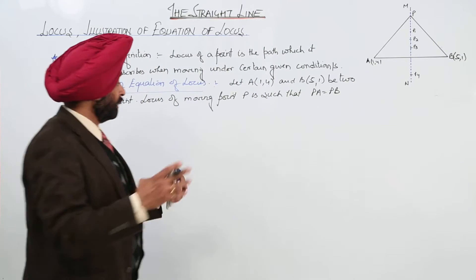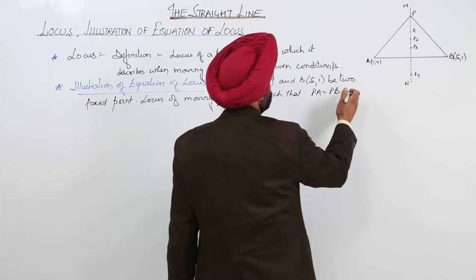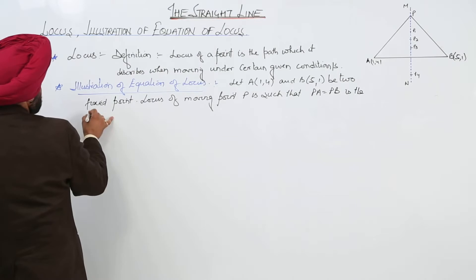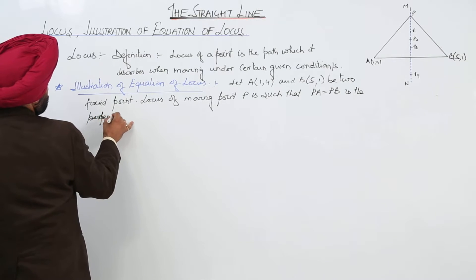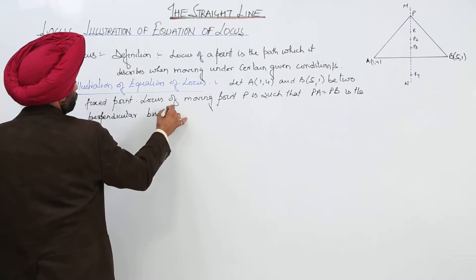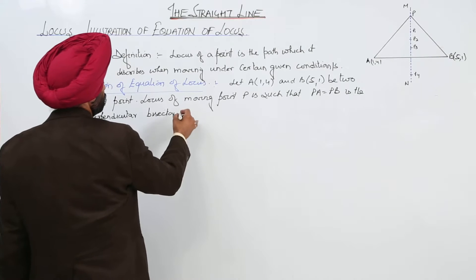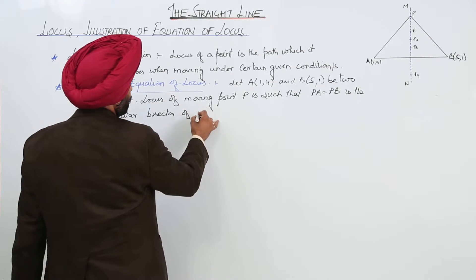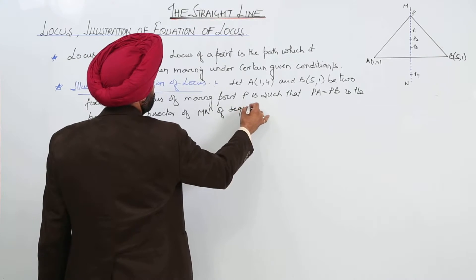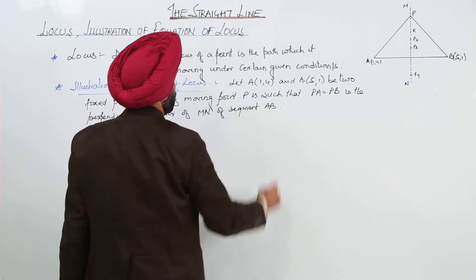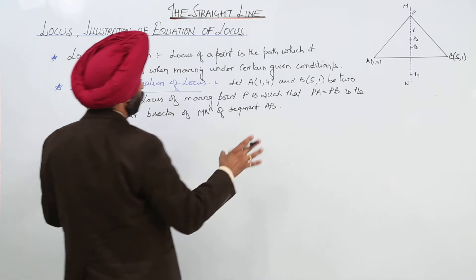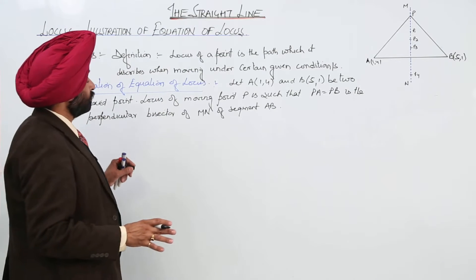Then, it satisfies the condition. Now, when the distance is equal, when P is such that PA is equal to PB, is the perpendicular bisector of the line segment AB, means MN should always be perpendicular to AB. This is what all about the illustration of the equation of the locus.